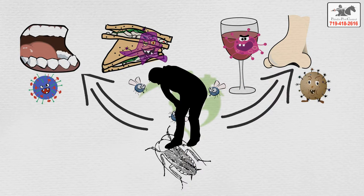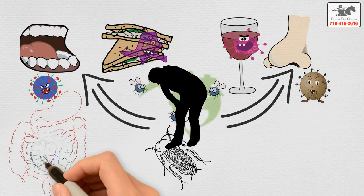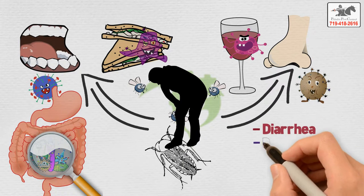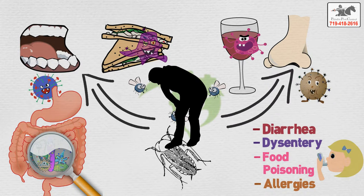When these viruses, bacteria, and protozoa develop in the human body, the end product comes in the form of diarrhea, dysentery, and food poisoning, even allergies that will unfortunately trigger asthma.